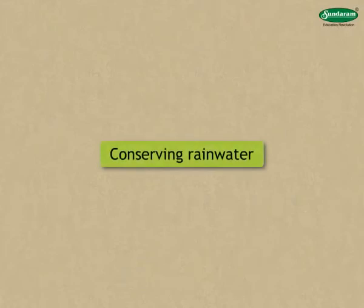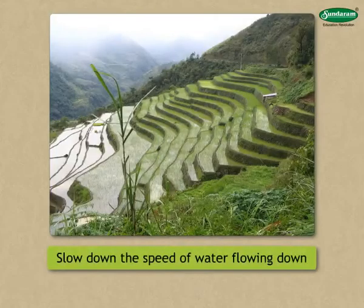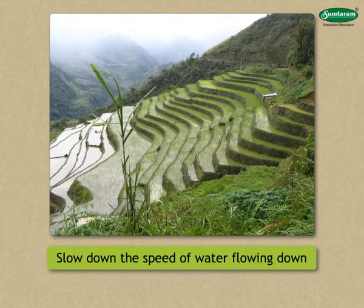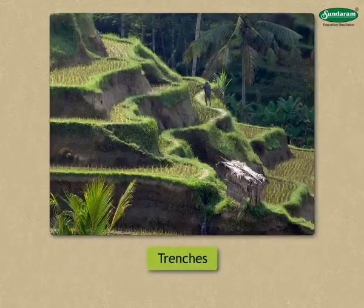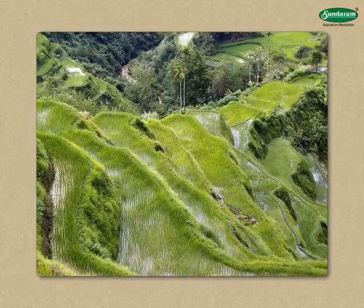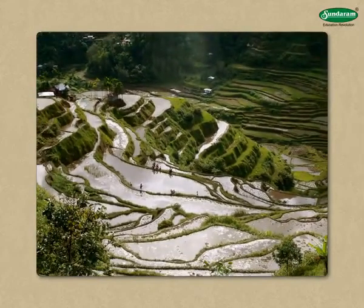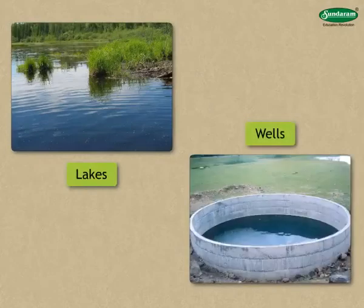We shall now study about conserving rainwater. Embankments built across the slopes of hillsides slow down the speed of water flowing down and allow it time to seep into the soil. Sometimes, trenches are dug across the slopes, which also helps to stop water from flowing down and allows it to seep into the soil. The water percolating into the ground adds to the store of water in the lakes and wells in the surroundings. The moisture in the soil also lasts longer.